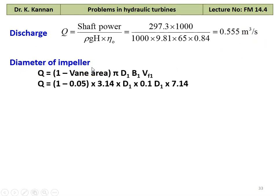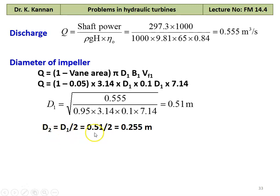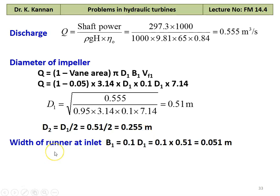The diameter of the impeller: Q equal to (1 minus vane area) into pi D1 B1 into Vf1. Vane area occupies 5%, so (1 minus 0.05) into 3.14 into D1 into B1 into Vf1. From the breadth ratio, B1 equal to 0.1 times D1, and Vf1 equal to 7.14. Solving, D1 equal to square root of 0.55 divided by 0.95 into 3.14 into 0.1 into 7.14 equal to 0.51 meter. D2 equal to D1 divided by 2, which is 0.51 divided by 2 equal to 0.255 meter. Width of the runner at the inlet B1 equal to 0.1 into D1, which is 0.1 into 0.51 equal to 0.051 meter.